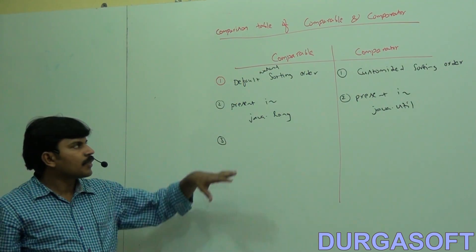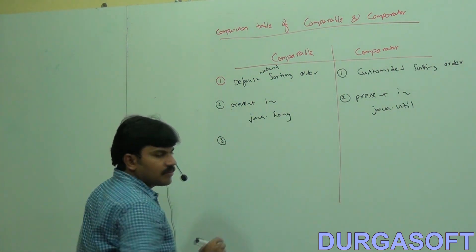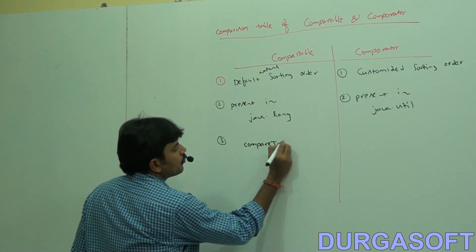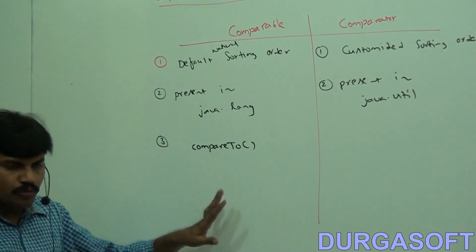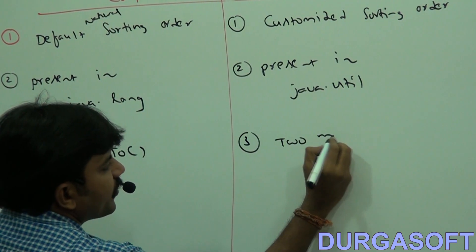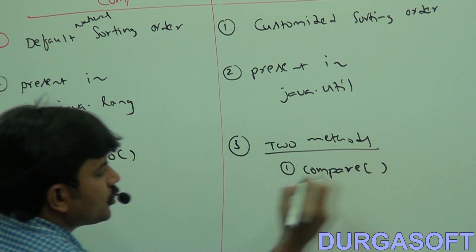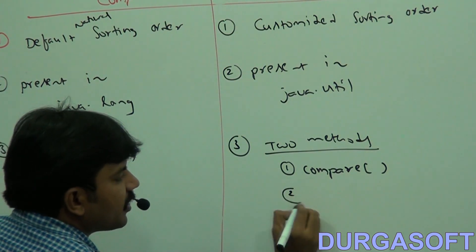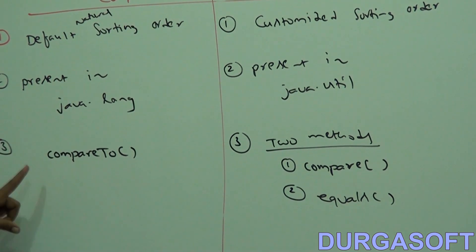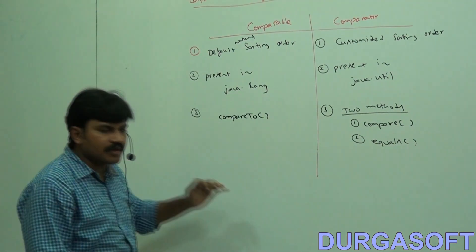Third point: how many methods does Comparable contain? It contains only one method — the compareTo method. But the Comparator interface contains two methods: the first one is the compare method, and the second one is the equals method. Of course, most of the time the equals method is dummy. So Comparable has only one method — compareTo — while Comparator has two methods: compare and equals.